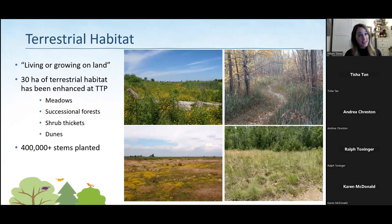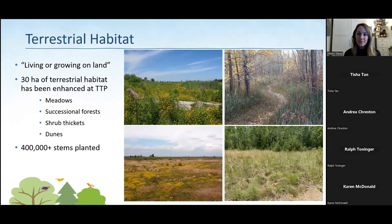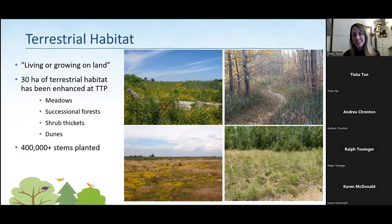To date, over 30 hectares of terrestrial habitat have been enhanced at TTP, and over 400,000 stems have been planted — including trees, shrubs, wildflowers, and grasses, and the aquatics that Andrea mentioned are also included in this statistic. We try really hard — we insist on choosing species that will not only grow and thrive in the harsh conditions of the park based on the substrate they're trying to grow in, but also species that are native and typical to the area historically. White pines are one example.